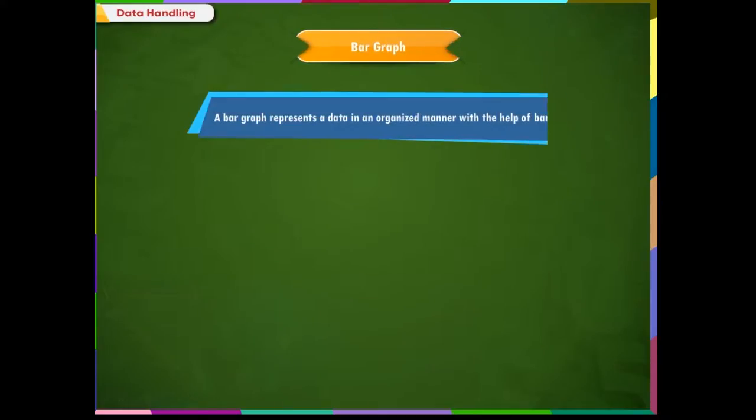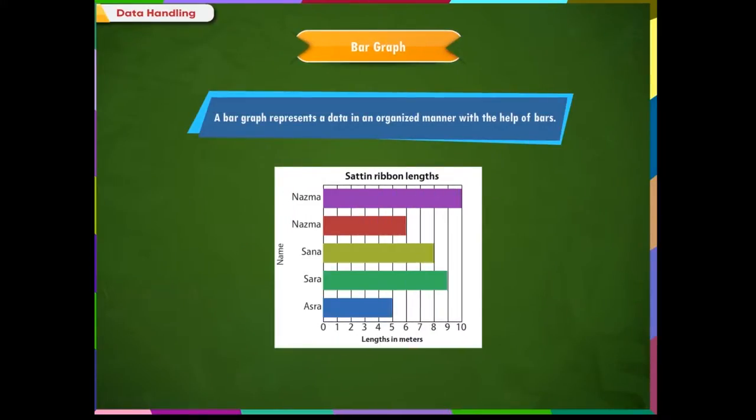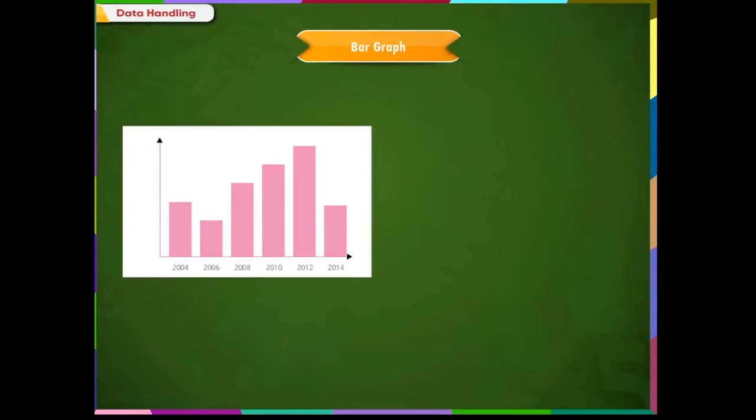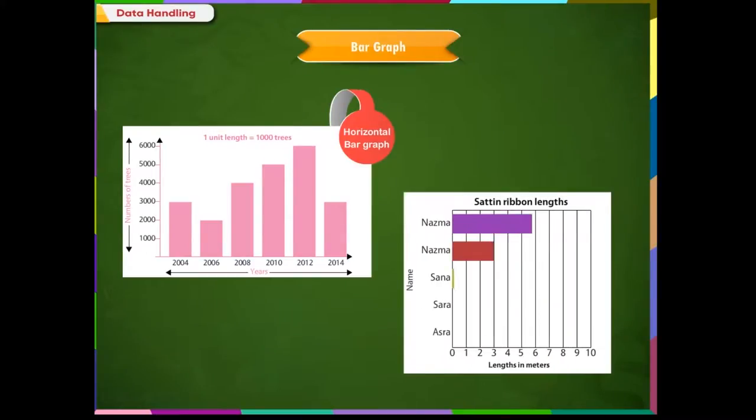Bar graph. A bar graph represents data in an organized manner with the help of bars. A bar graph can be horizontal and can be vertical.